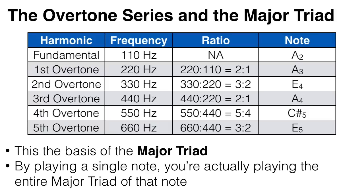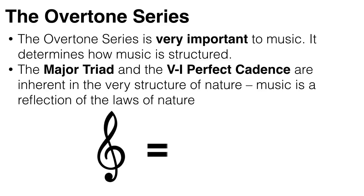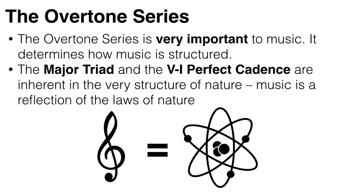So then in the first five overtones we have the root A, the major third C sharp, and the fifth E — which is the basis of the major triad. So by playing a single note you're actually in effect playing the entire major triad of that note. The major triad and the 5-1 perfect cadence are not just things created out of thin air — they are inherently in the structure of nature, and music is just a reflection of the laws of nature.